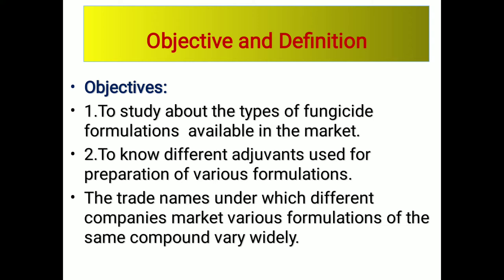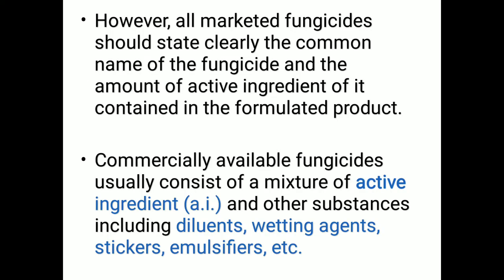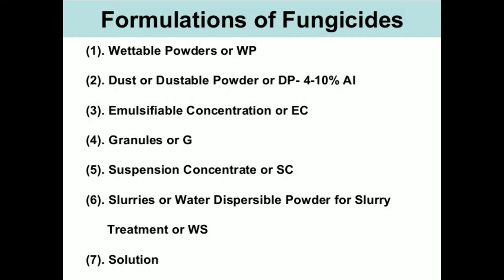We will see the different trade names and common names of fungicides. Commercially available fungicides usually consist of active ingredients and other inert material or adjuvants — for example, a diluent, wetting agent, stickers, and emulsifier. The formulation types include wettable powder (WP), dustable powder (DP), emulsifying concentrate (EC), granules (G), suspension concentrate (SC), and slurries or solution.